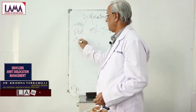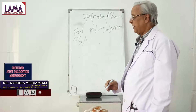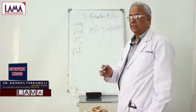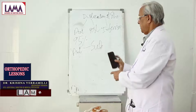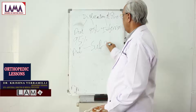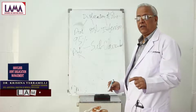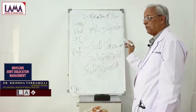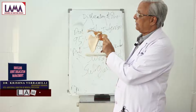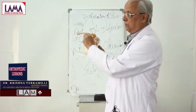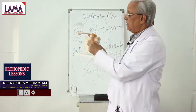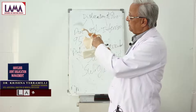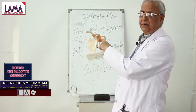95 percent of shoulder dislocations will be anterior. In anterior dislocation, depending on where the head is placed after dislocation, we call it subclavicular — where the head of the humerus goes below the clavicle — or subcoracoid, if it is just below the coracoid process, or subglenoid, when the head lies just below the glenoid cavity.